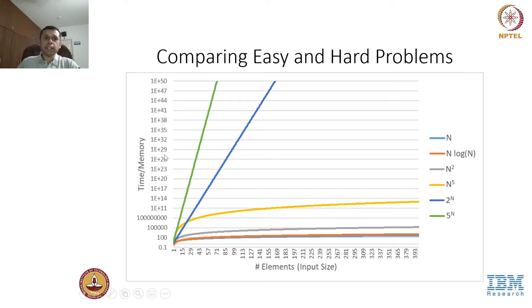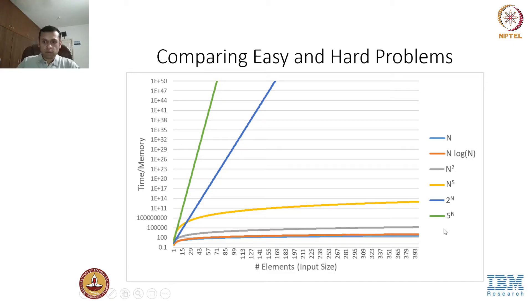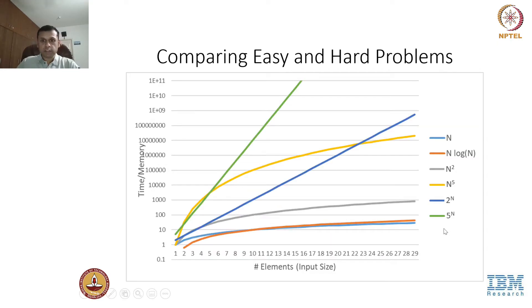Moving from a linear scale to a log scale graph, the polynomial functions essentially flatten out whereas exponential functions rise linearly, as expected on a log scale. Zooming into the bottom left-hand corner, we see that the n to the power 5 curve does not always perform better than our exponential curves. At lower input sizes, the polynomial can actually dominate the exponential curves.